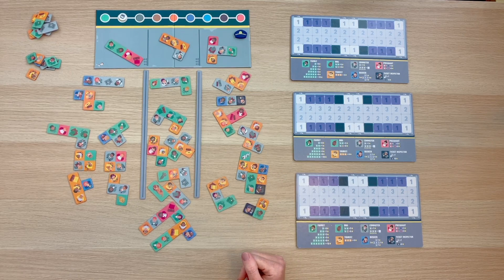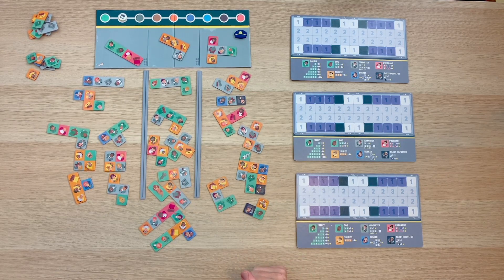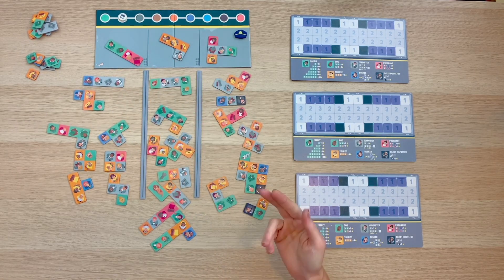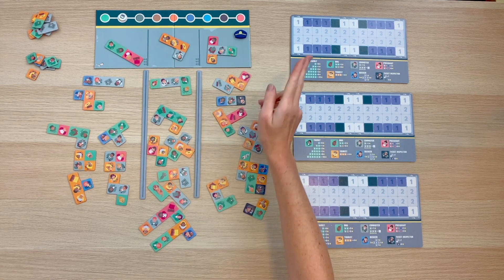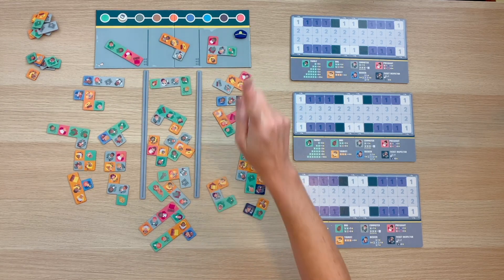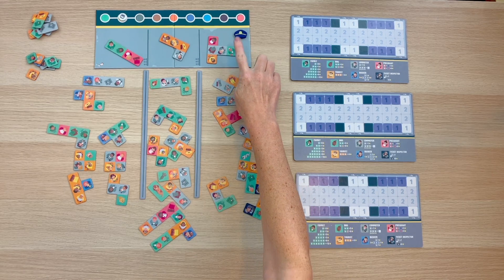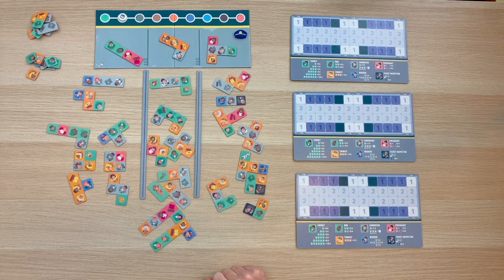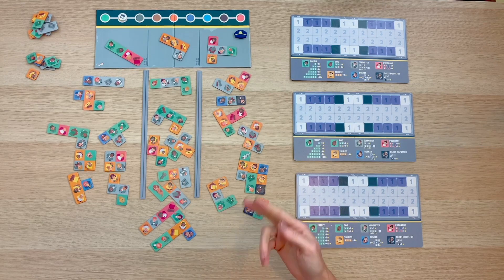The next step of gameplay is to pick a passenger piece. The player to the left of the conductor will start and choose any piece they would like from the platform. Play will continue like this, and the conductor will get the last passenger that's left on the platform. Now, whoever takes the piece that is associated with the conductor chip must take the conductor chip as well, and they're going to be the conductor for the next round.